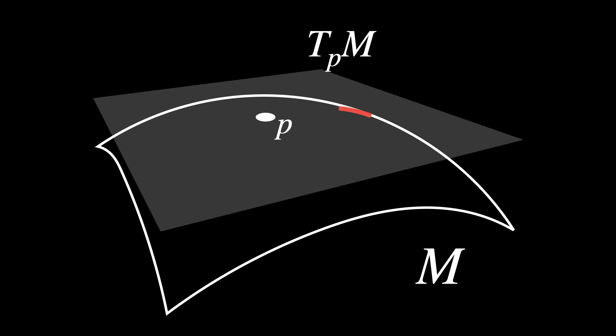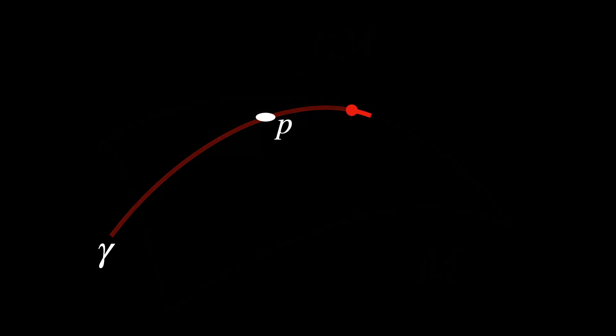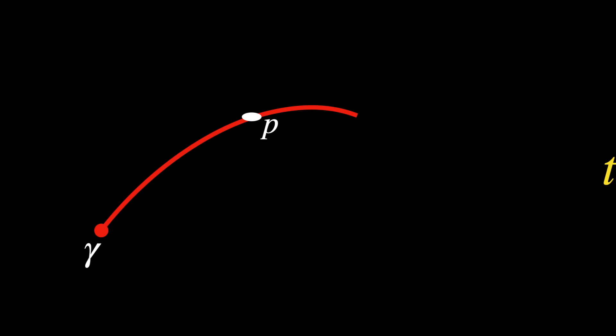Say we trace a specific path on M, called gamma, through the point P. You can think of gamma as the trajectory of a moving point. This path is parameterized by T, meaning T is a variable, like time, that allows us to describe the position of the point on the path at any given moment.